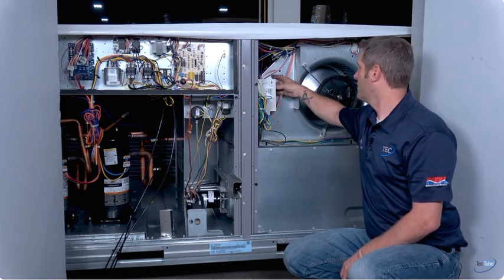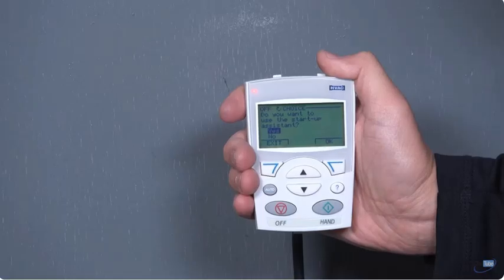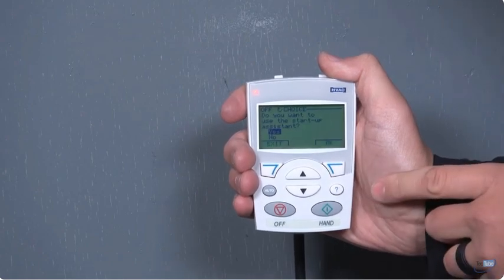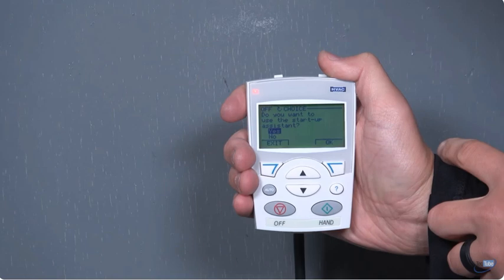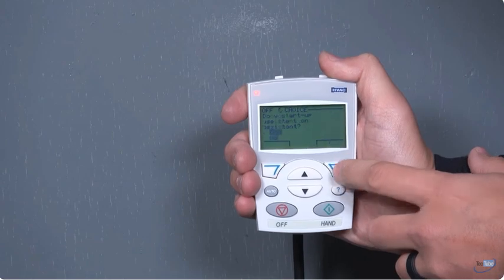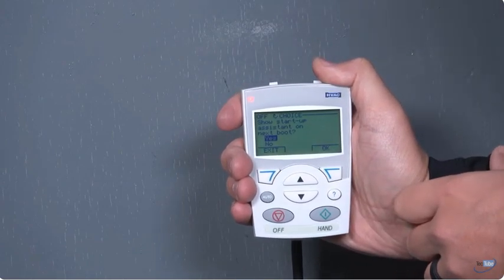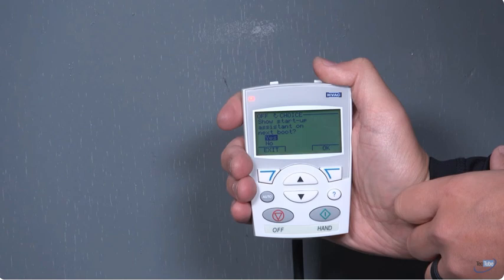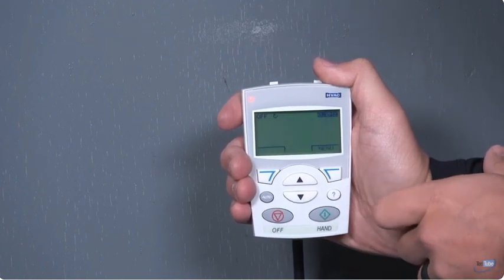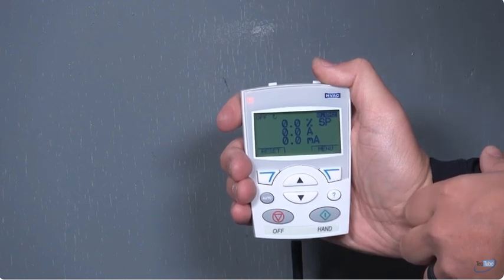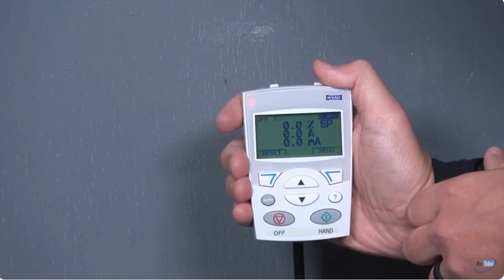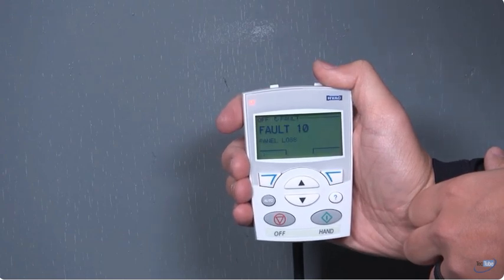At this point the LED screen will illuminate and we can now check our parameters. When we're about to program and set up the VFD, the first parameter you're going to see is: do you want to use the startup selection? The answer is no. Go down to no, select, hit okay. It's going to say should we show the assistant on next boot? The answer is no. Scroll down to no, okay.